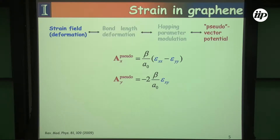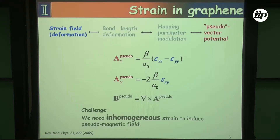In terms of calculating our strained effective gauge fields, all we have to do is look at the strain tensor from our unstrained lattice positions, and we're able to calculate the effective gauge fields in the X and Y directions. From this we can calculate our effective magnetic field induced by using strain.